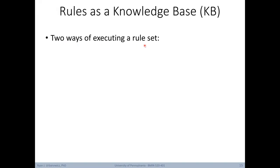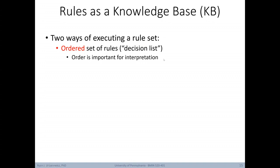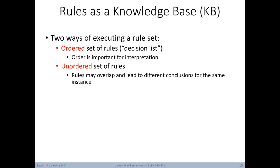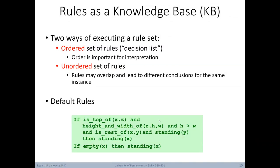First, you can have an ordered set of rules, also known as a decision list — the order of rules is important for how it's interpreted. Alternatively, we can have unordered rule sets where rules can overlap and lead to different conclusions for the same instance, introducing conflicts. There are some benefits to having an unordered versus an ordered rule set. Another thing you can do is rely on default rules — creating rules for specific outcomes, and if they're not satisfied, a default rule with a default action or conclusion is triggered.